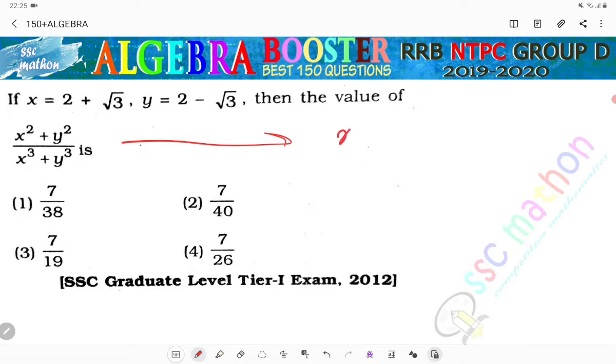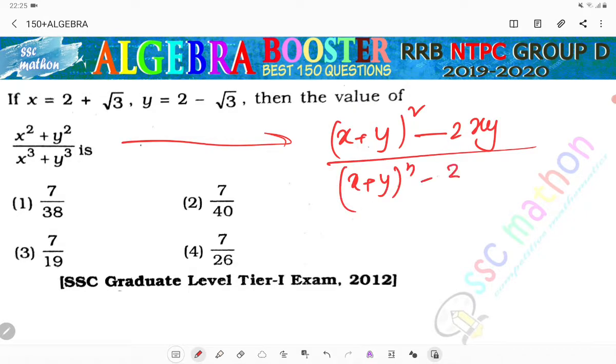What is x square plus y square? x plus y whole square minus 2xy. And x cube plus y cube? x plus y whole cube minus 3xy into x plus y.